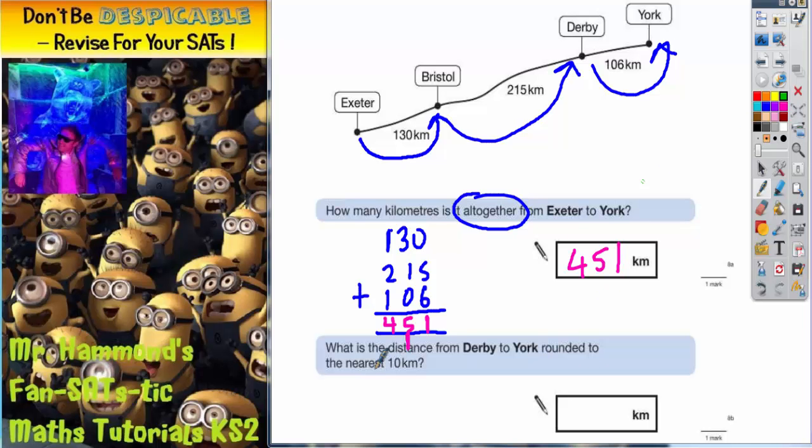The second part of the question says what is the distance from Derby to York rounded to the nearest 10 kilometres? So we need to round it to the nearest 10.